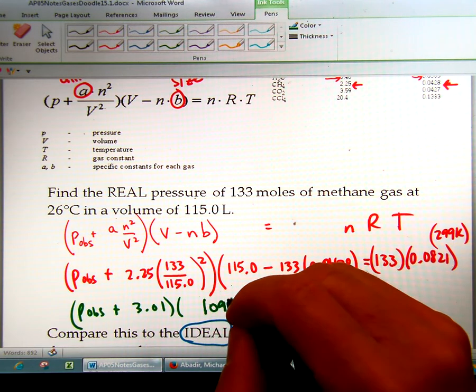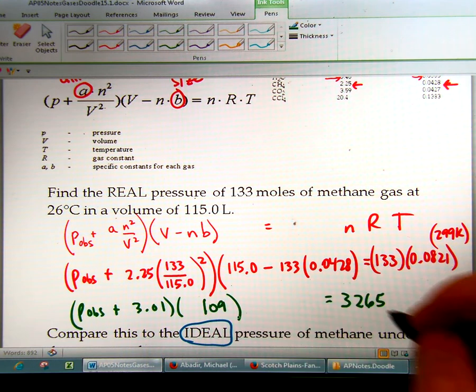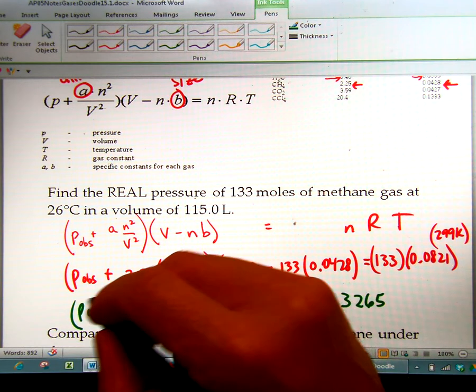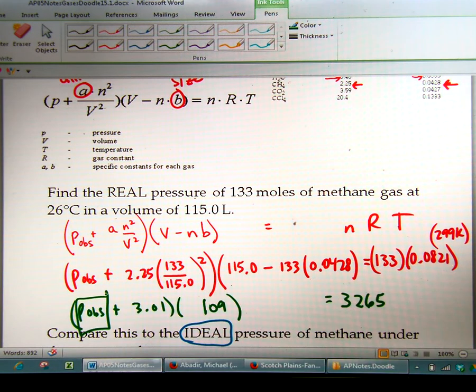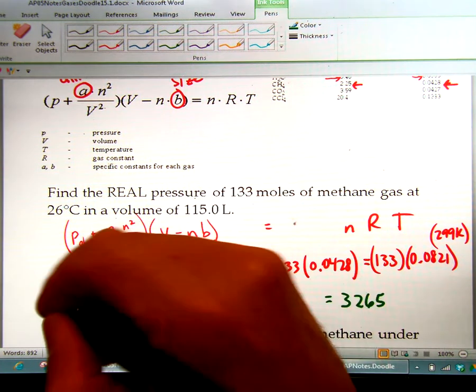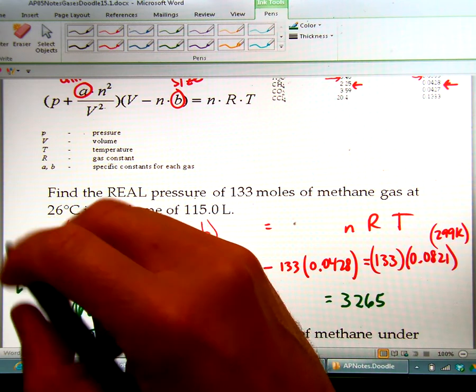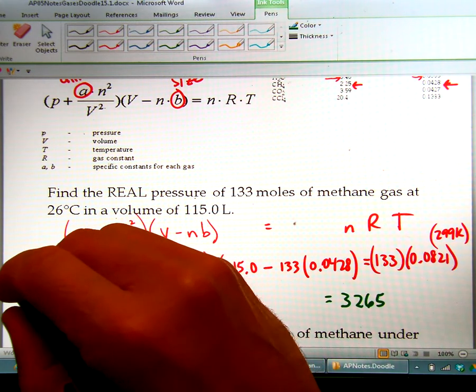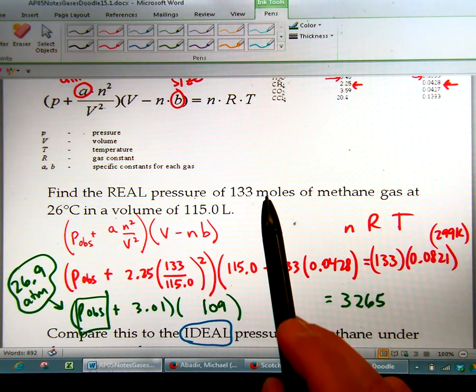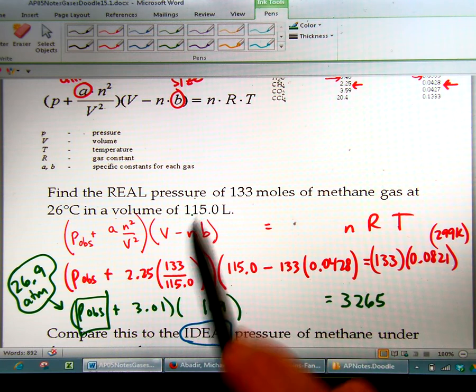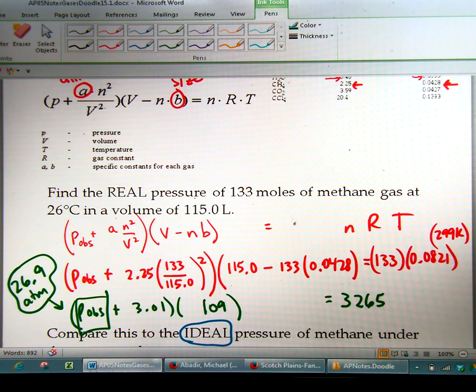And that's going to now solve for P observed. So we divide by 109, 3265 divided by 109, and then we subtract 3.01, and we're going to get 26.9. So this comes out to be 26.9 atmospheres, which is a pretty high pressure because we have so many moles in only 115 liters.